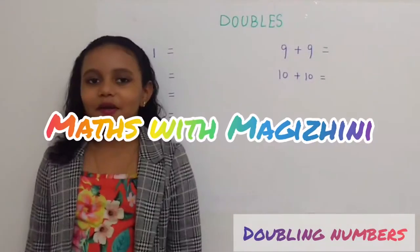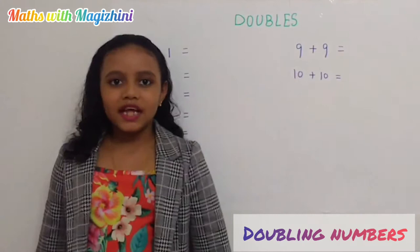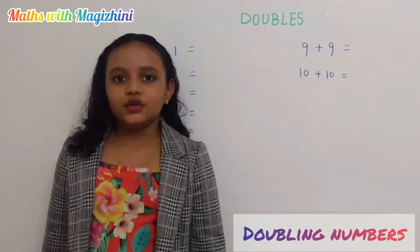Today we're going to learn about doubling numbers. What does doubling numbers mean? Doubling means adding the number to itself. Doubling also means multiplying the number by 2.